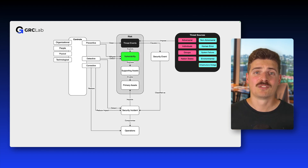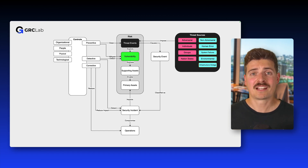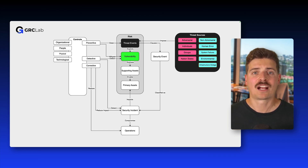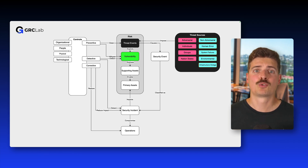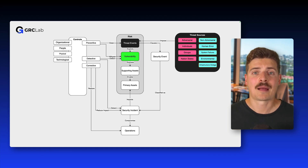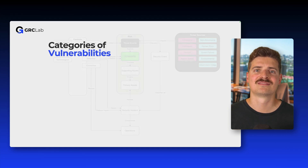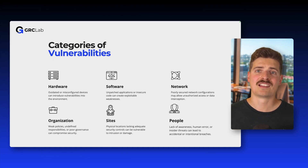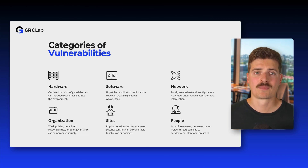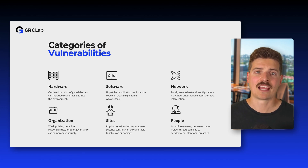That brings us to vulnerabilities — the weak points in our organization's defenses. Vulnerabilities could be anything from outdated software, misconfigured systems, lack of training, or even missing policies. Threats exploit these vulnerabilities to compromise the confidentiality, integrity, or availability of our core cybersecurity objectives. Most vulnerabilities come from security controls that aren't applied correctly, whether that's by mistake or by choice. In general, we can find vulnerabilities in hardware components, software, applications, and networks.